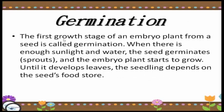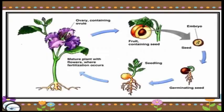After producing the fruit and seed, germination takes place. The first growth stage of an embryo plant from a seed is called germination. When there is enough sunlight and water, the seed germinates, sprouts, and the embryo plant starts to grow. Until it develops leaves, the seedling depends on the seed's food store. As you can see in the image, the process goes from ovary containing oil, to fruit containing seed, to embryo, to germinating seed, to seedling — completing the cycle.